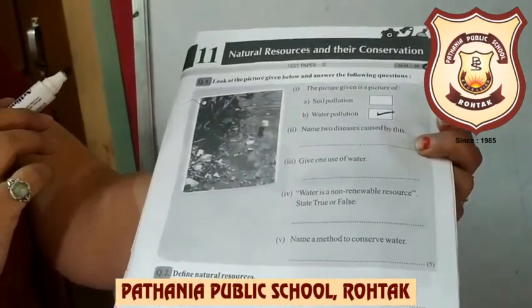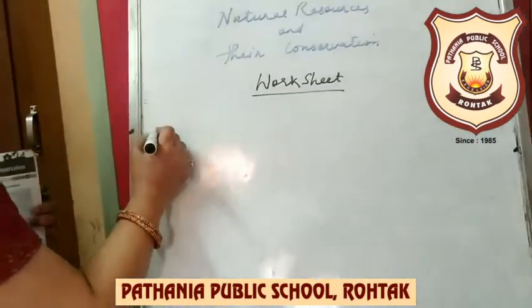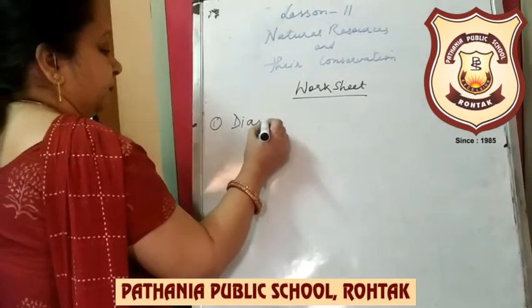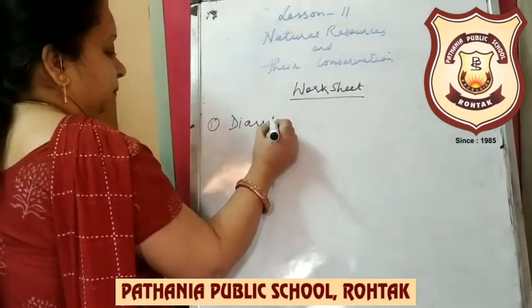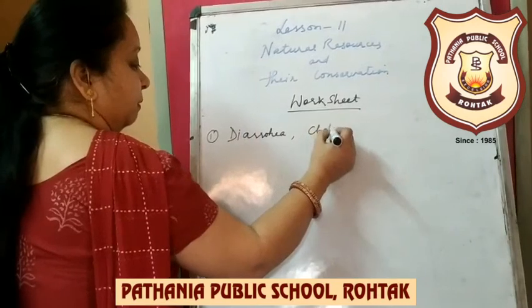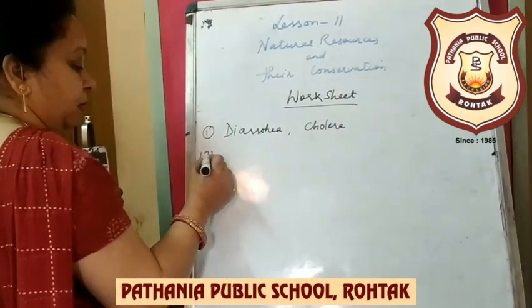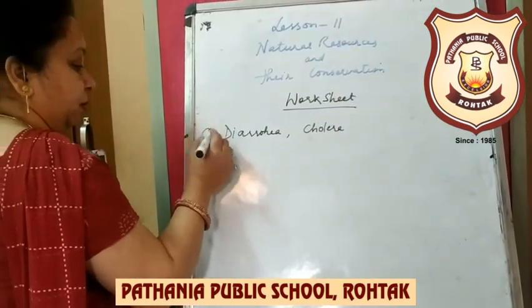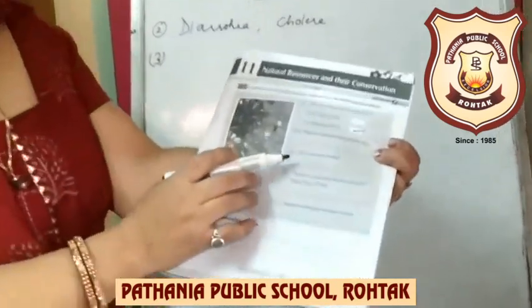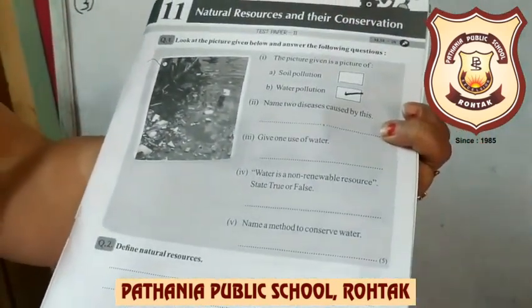Name two diseases caused by water pollution. The diseases caused by water pollution are: first, diarrhea, and second, cold.